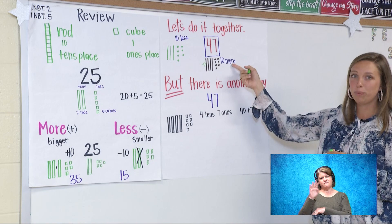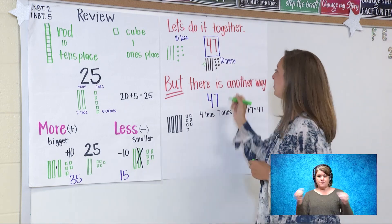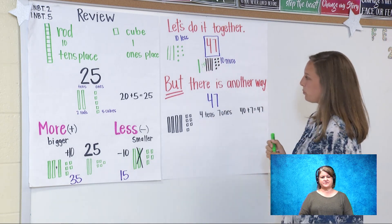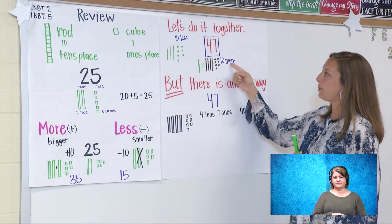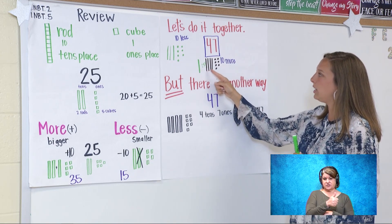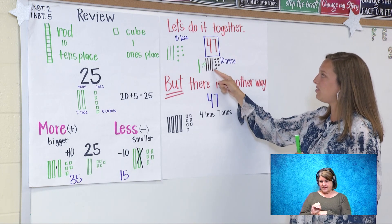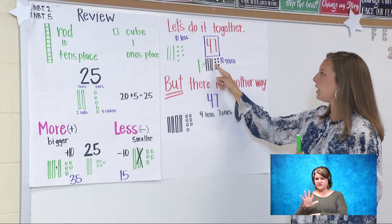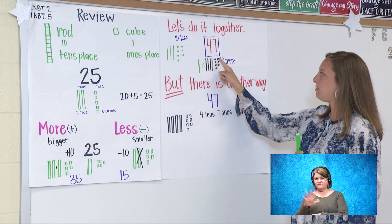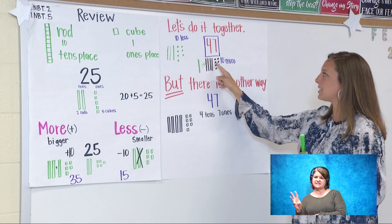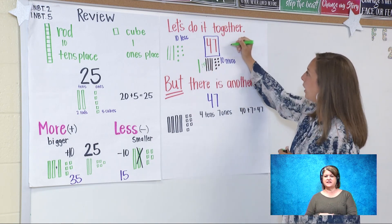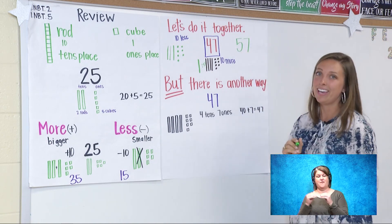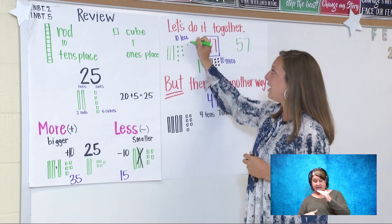Now let's do 10 more. We're going to add a rod. Here we go: 10, 20, 30, 40, 50, 51, 52, 53, 54, 55, 56, 57. 10 more than 47 is 57. 10 less than 47 is 37.